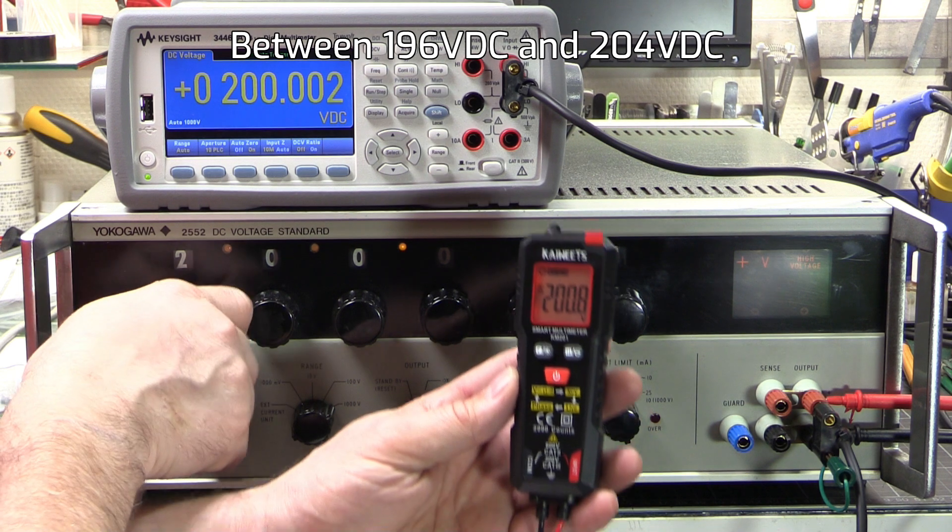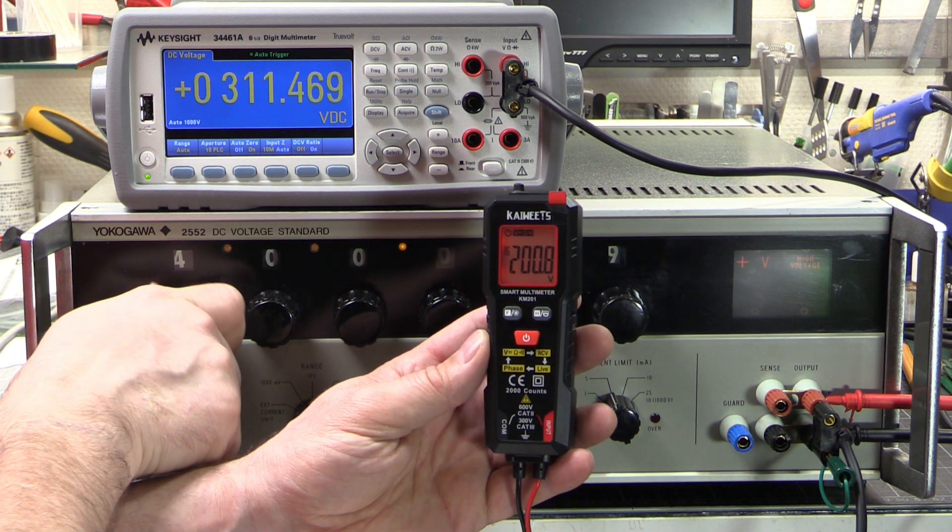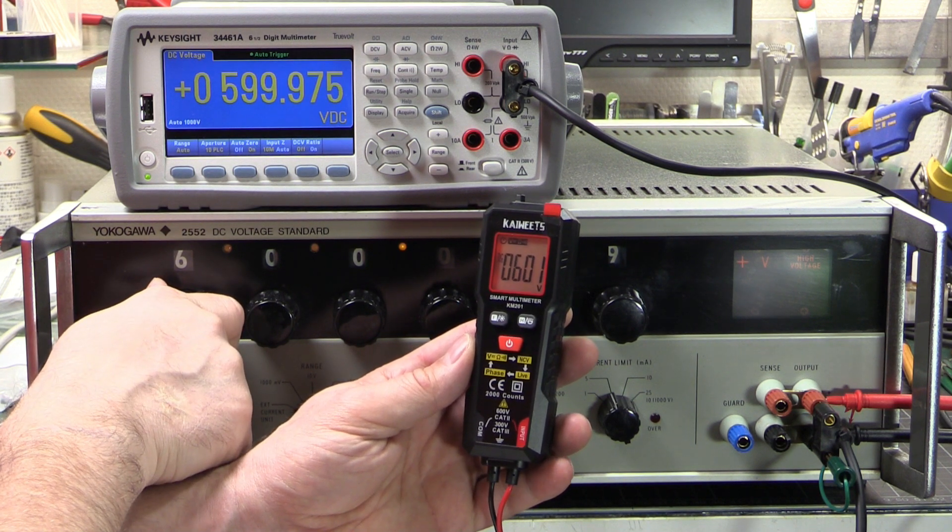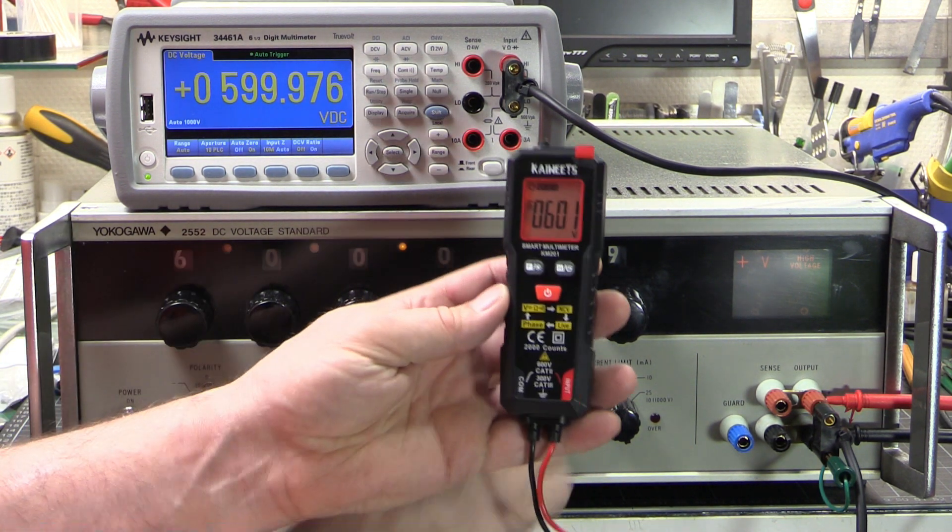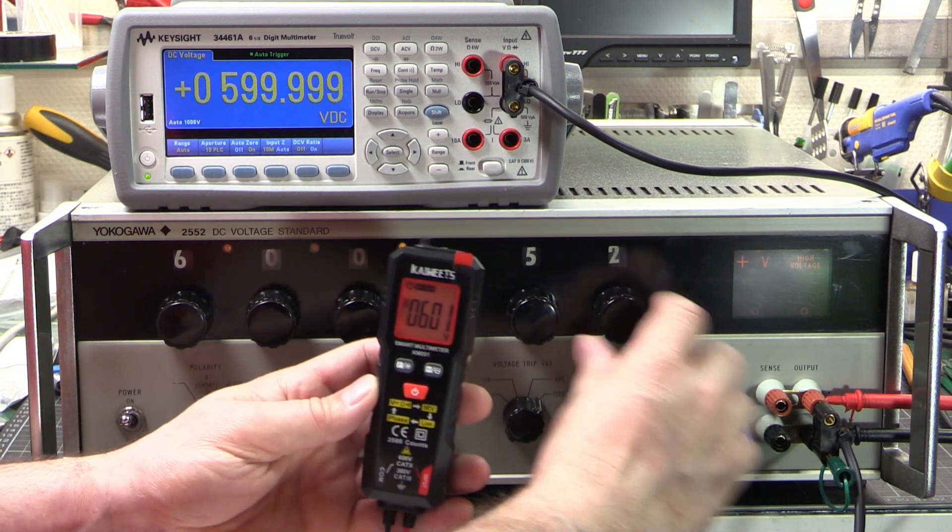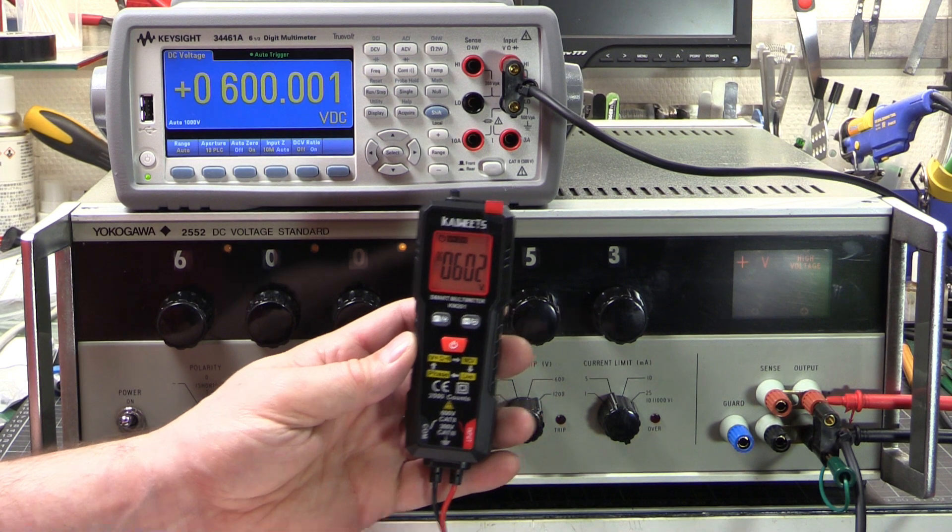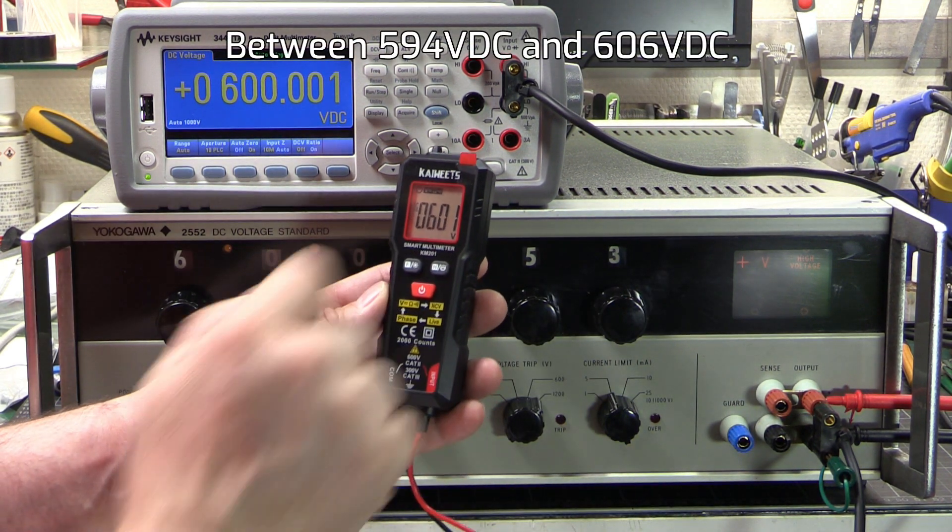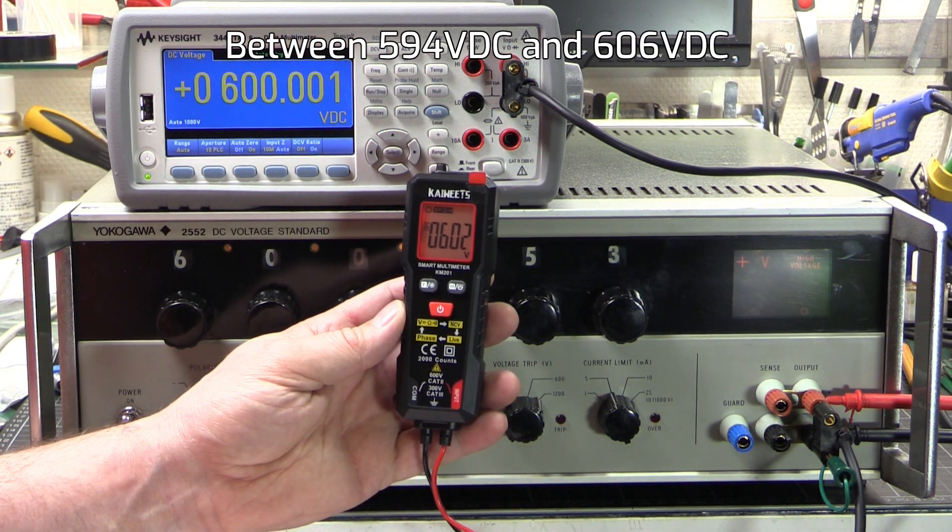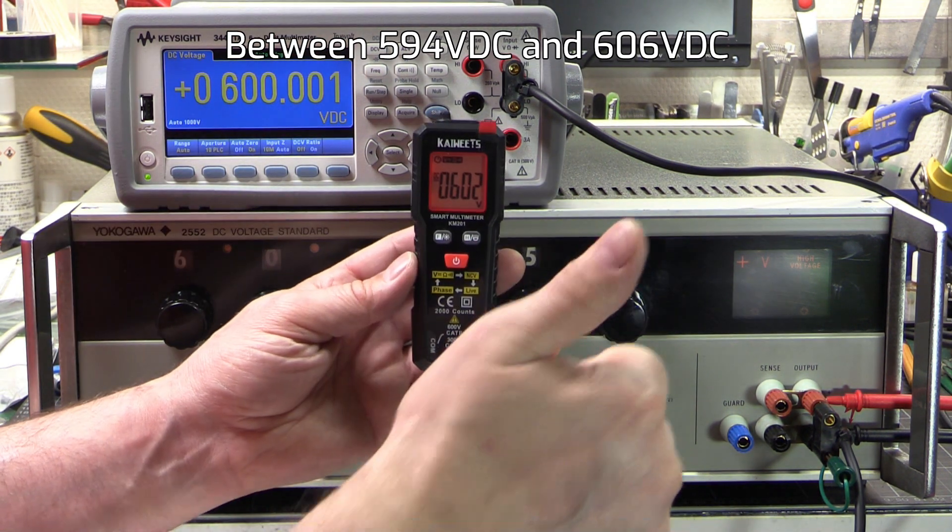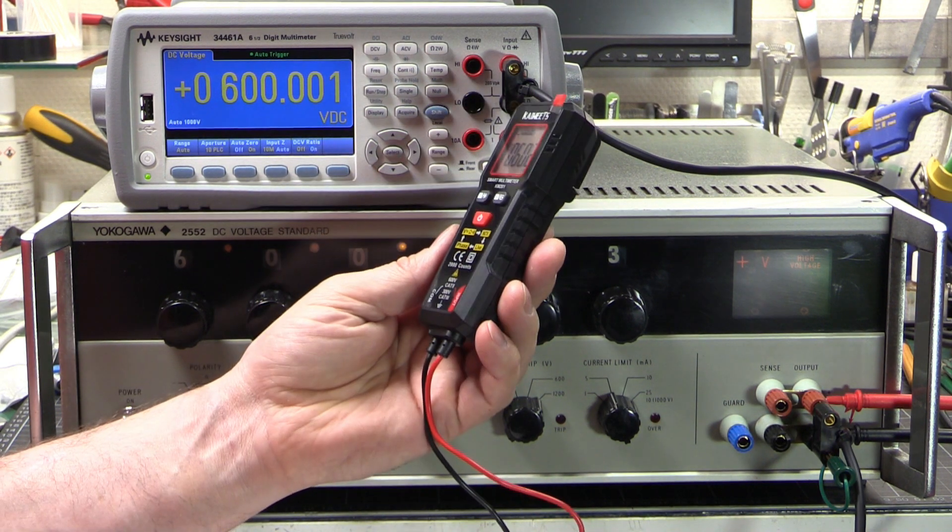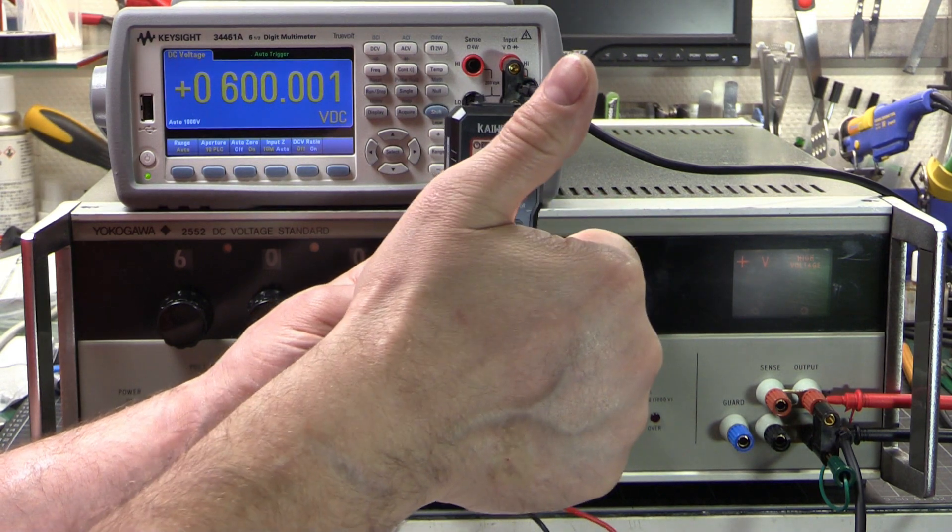And the last one. 600 volts. 500 volts. 600 volts. It's beeping at us. Give this a little bit of a tweak. 600 volts. Give it one more. There we go. And we've got 601 volts for 600.000. Yeah. This thing reads fine. There's nothing wrong with the calibration or the accuracy of this thing. It's, yeah. Thumbs up on that.